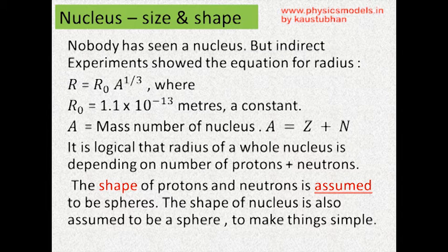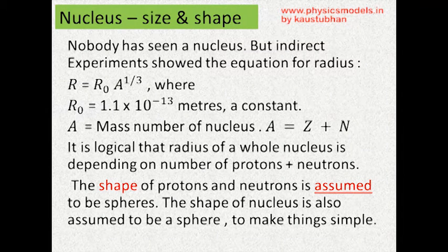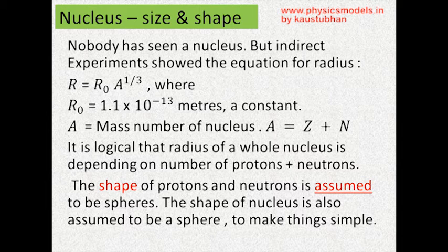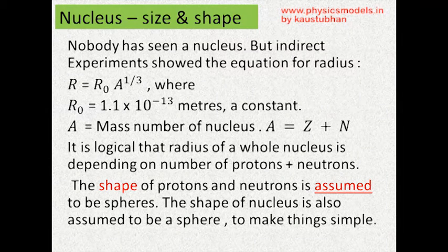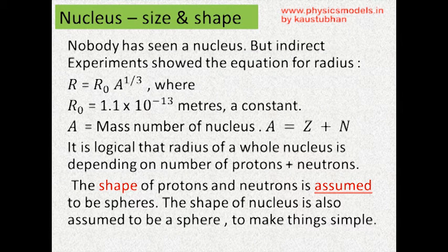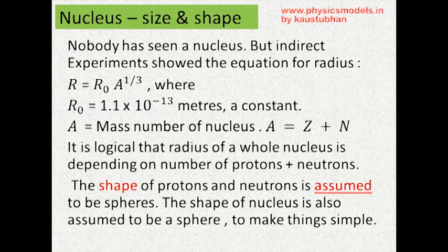And A is the mass number of the nucleus, and we know that mass number is equal to the number of protons Z plus number of neutrons N. So therefore it's logical that the radius of a nucleus is proportional to the mass number to the power 1 by 3.